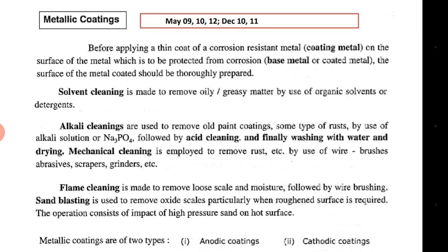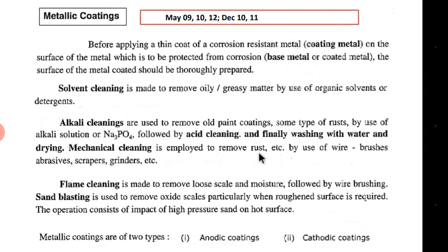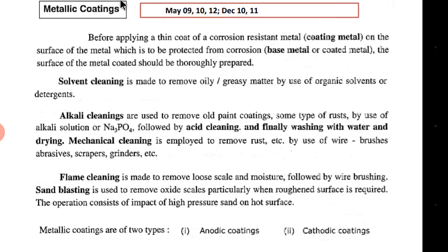Before we apply any metallic coating on a metal, step one is solvent cleaning — clean the metal to remove all oily and greasy material. Step two, we can use either alkali or acid to clean the surface so that it is free from rust or any other material that can interfere in the coating process. You can also use wire brushes, abrasives, scrapers, or grinders for cleaning.